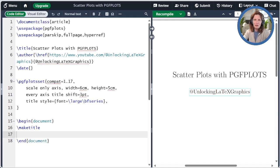I've already created a starting point for us with a document preamble. The main requirement is the package pgfplots. The other packages are just conveniences. Here parskip and fullpage are just to make things look nice. The hyperref package is so that I can link the author name back to the YouTube channel, as you see over here.